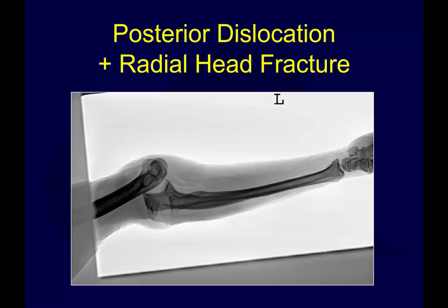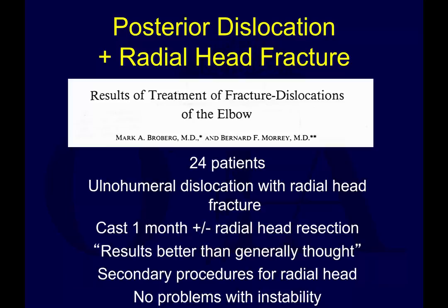Here you can see a posterior elbow dislocation with a radial head fracture. In this early study from the Mayo Clinic, 24 patients were treated with radial head fracture and elbow dislocation with resection. They thought these did okay, although they had some secondary procedures, so it's really hard to take a whole lot away from that.